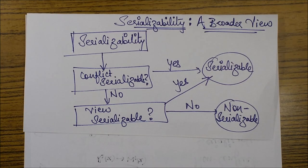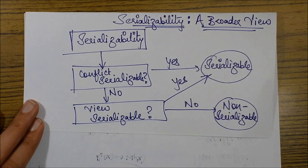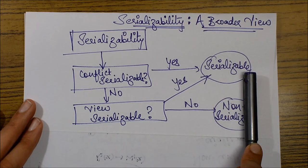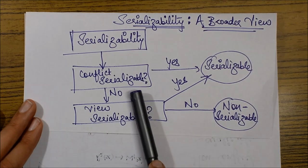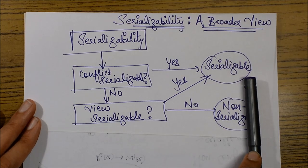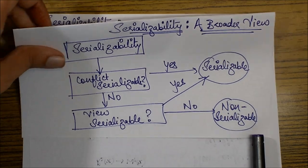In the previous videos we learned about some concepts about serializability and discussed conflict serializability. In this session we will be discussing view serializability. First, let's take a broader view on serializability — the steps in which we check if a particular schedule is serializable or not. We first check if the schedule is conflict serializable. If it is, we say the schedule is serializable. If the test fails for conflict serializability, we check for view serializability. If it is view serializable then it is serializable; otherwise it is a non-serializable schedule.